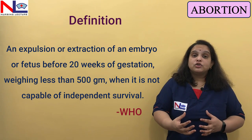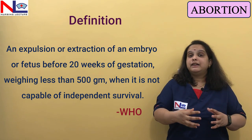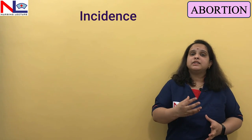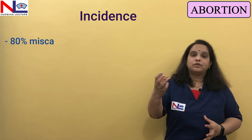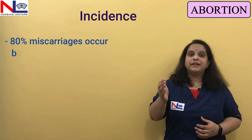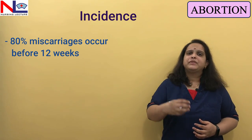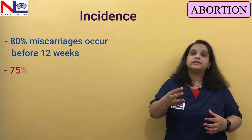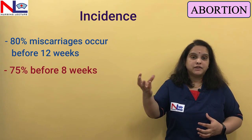Abortion can happen spontaneously or be done deliberately and intentionally. In terms of incidence, abortion is most likely to happen during the first trimester of pregnancy — when it is less than 12 weeks of gestation. In the majority of cases within the first trimester, it is most likely to happen before eight weeks of gestation.